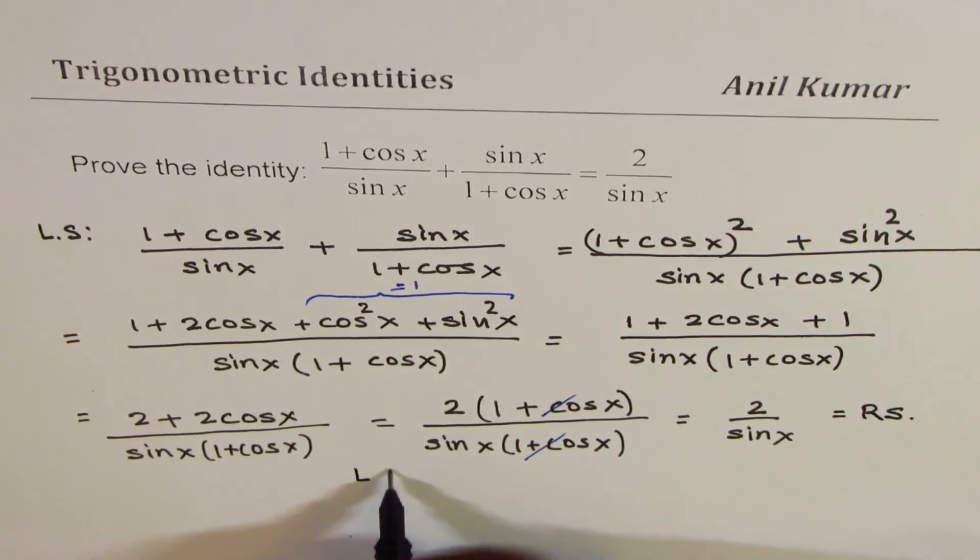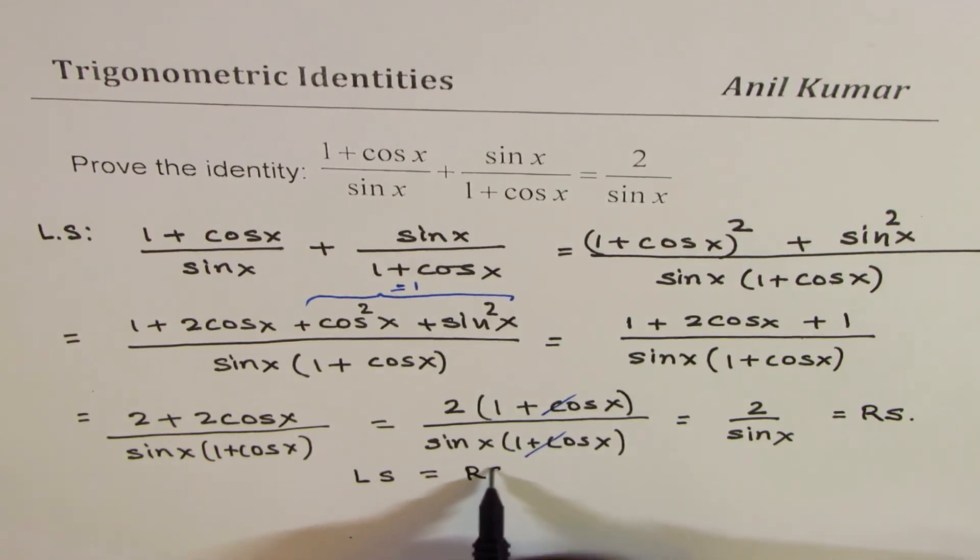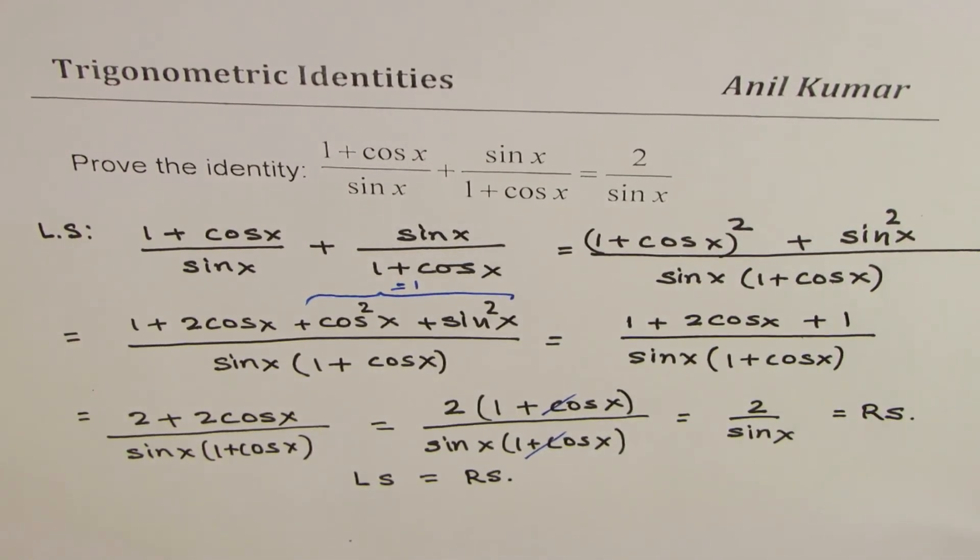So, you have proven that left side is equal to right side. Hence, the identity has been proven.